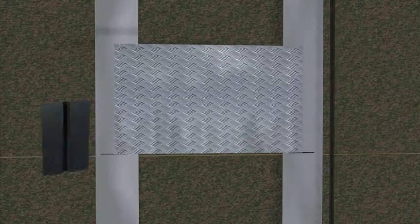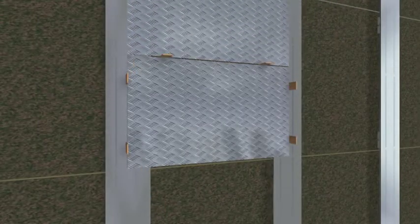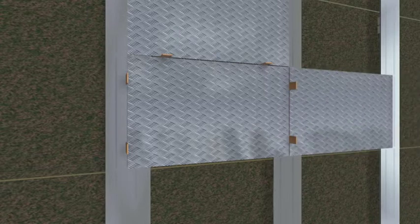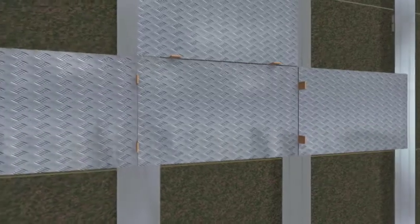If desired, place joint profiles between the facade panels. Apply the other facade panels in the same way. Using distance blocks is useful to position the panels evenly.